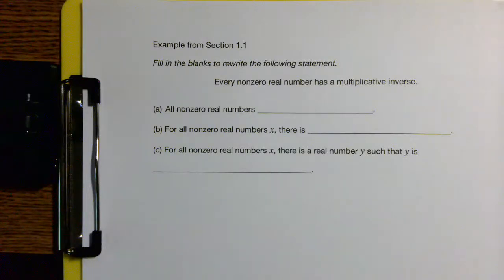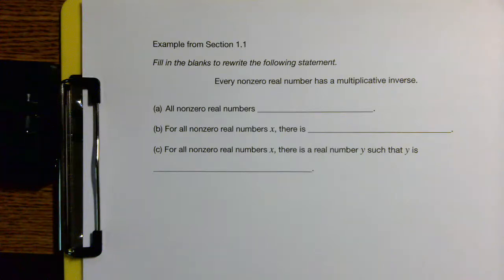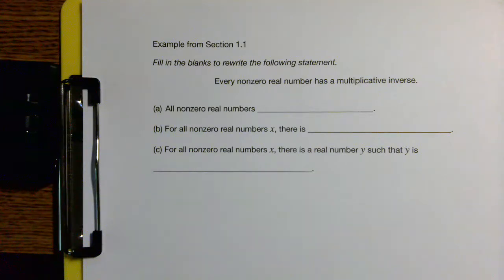Let's have a look at this example from section 1.1. Section 1.1 is a section that talks about variables, and it also begins to discuss this idea that when we express ourselves mathematically, we want to do so in a precise way to make sure the meaning we're intending to get across is actually communicated. This example says: fill in the blank to rewrite the following statement — 'Every non-zero real number has a multiplicative inverse.' That is a universal existential statement.